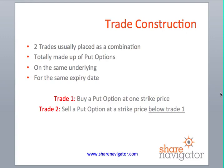To construct this trade, it involves two legs and is usually placed as a combination trade, made up entirely of put options on the same underlying and for the same expiry date. First, you buy a put option at a certain strike price, then you sell a put option at a strike price below the one you just bought.